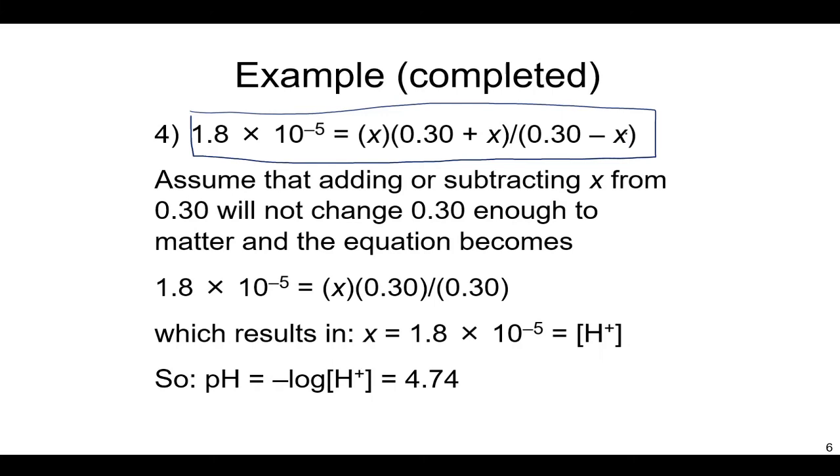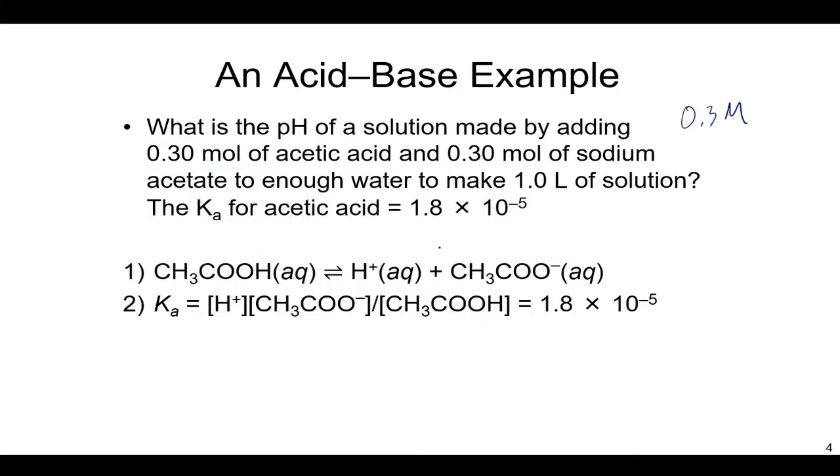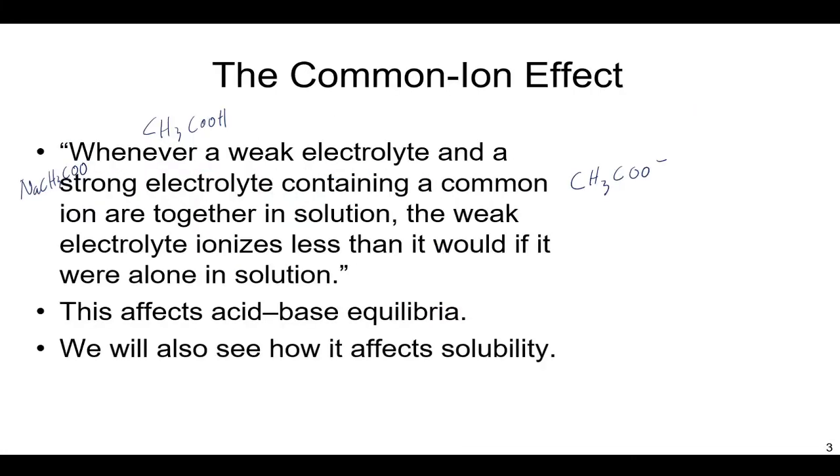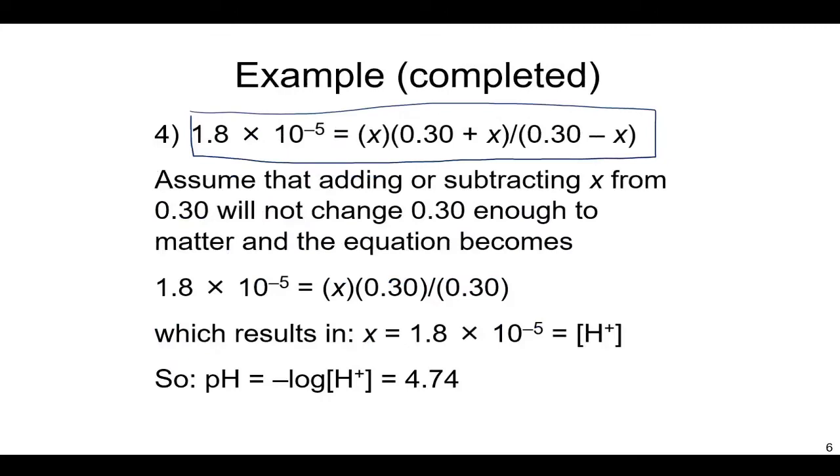This is what your equilibrium constant, the acid dissociation constant expression, would now look like. Ka equals products over reactants. Now, here's a trick that we will test, but usually works for these weak acid dissociations. If X is very small, and it should be, the whole concept of common ion is that this presence of acetate is going to cause a lower production of H plus.